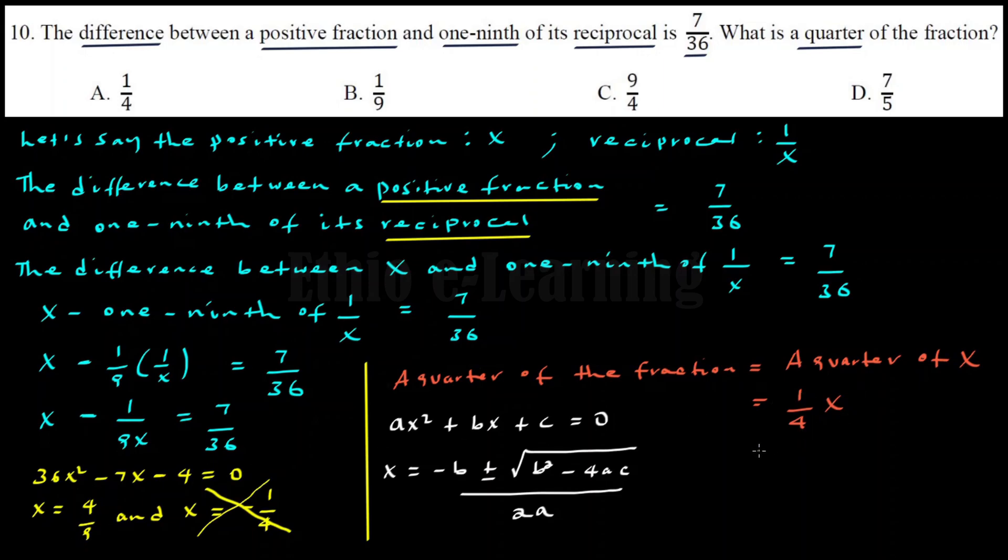So we substitute the positive value. We need to find a quarter of the fraction, which means one-fourth times x, which equals one-fourth times 4 over 9. Simplifying this, we get 1 over 9. Therefore, a quarter of the positive fraction is 1 over 9.